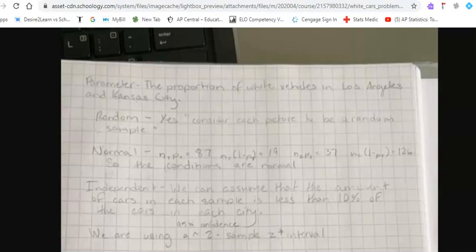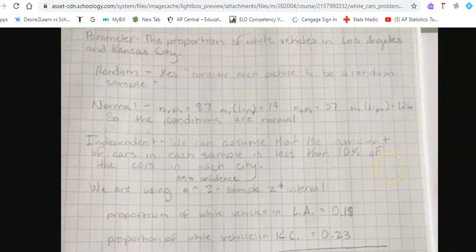She does a really nice job with her conditions. A lot of people forget to do all four conditions, so you can see she's got 87 successes, 37 successes for the other proportion, and the failures are also provided. To improve the independence, we need to make sure that each sample is 10% less than the population of each parameter, but we also need to make sure that the samples are independent from one another. That's only on the two-sample intervals.